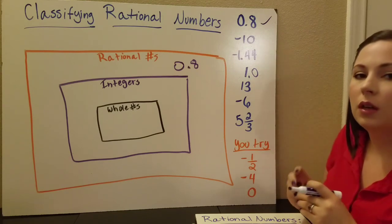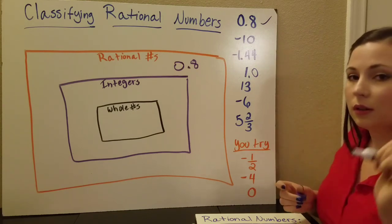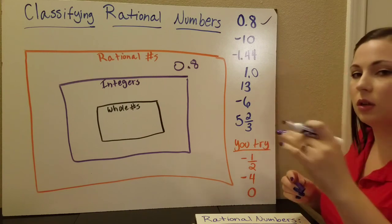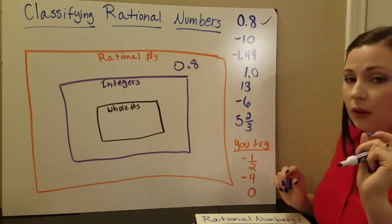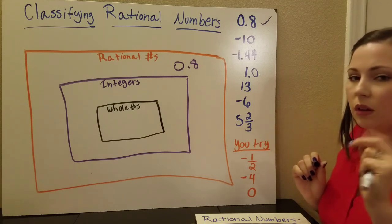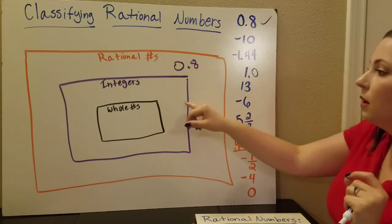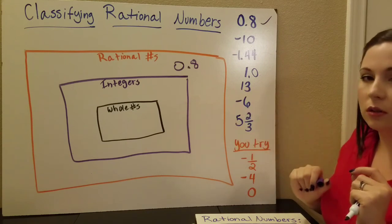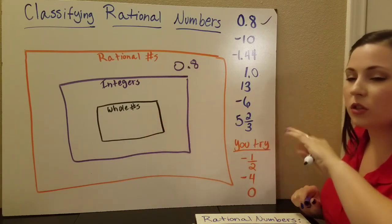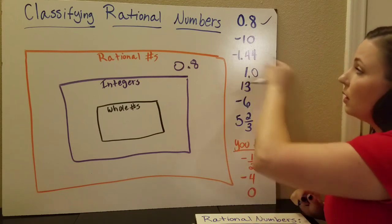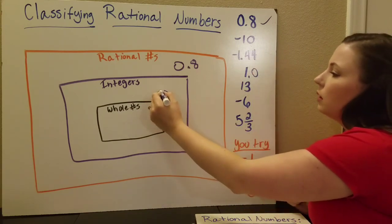Now negative 10. Could negative 10 be a rational number? Yes, because you can say it's negative 10 over 1. But is that the most specific, the smallest group we can put it in? No. The smallest group we can put negative 10 in is the integers, because whole numbers have no negatives.